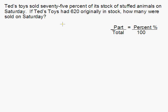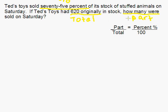So let's look at this for our information. We know we're looking for a percent, a part, or a total here. In the first sentence, I see that they sold 75%, so this is going to be my percent. Ted's Toys had 620 stuffed animals originally in stock, so our total is 620, and we have to find what part of that 620 were sold on Saturday.